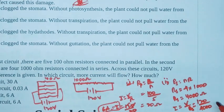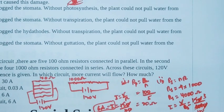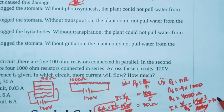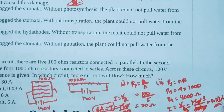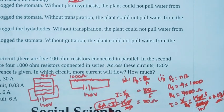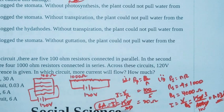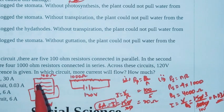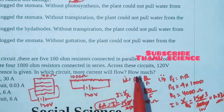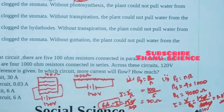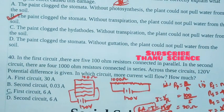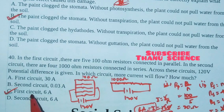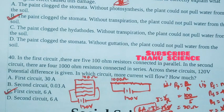Second circuit current is 0.03 ampere, but first circuit is 6 ampere. In which circuit more current will flow? First circuit. So according to this, option C is the right answer. First circuit, 6 ampere. Thank you students.